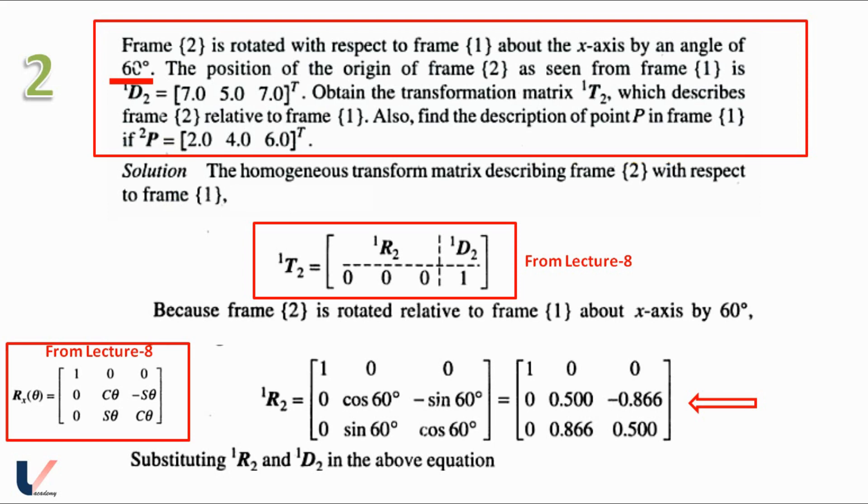1D2 is given in the question as 7, 5, 7. Substituting the value of 1R2 and 1D2 in the formula of 1T2.